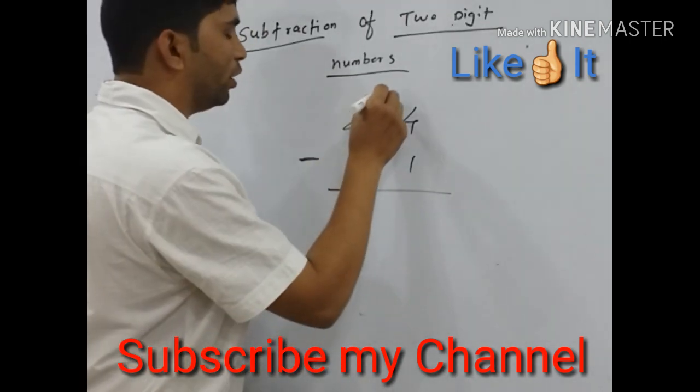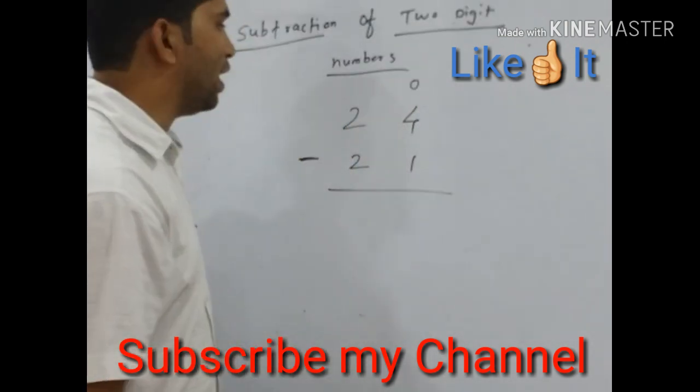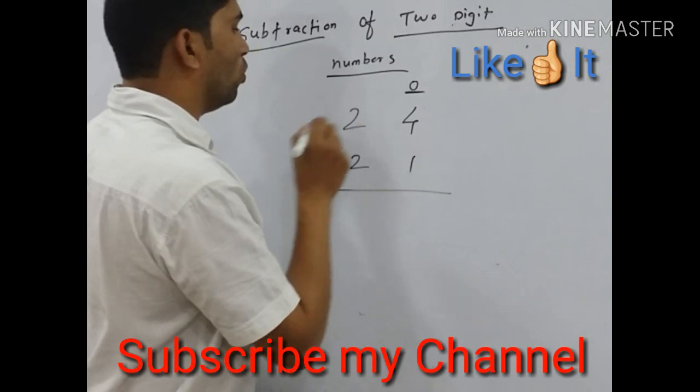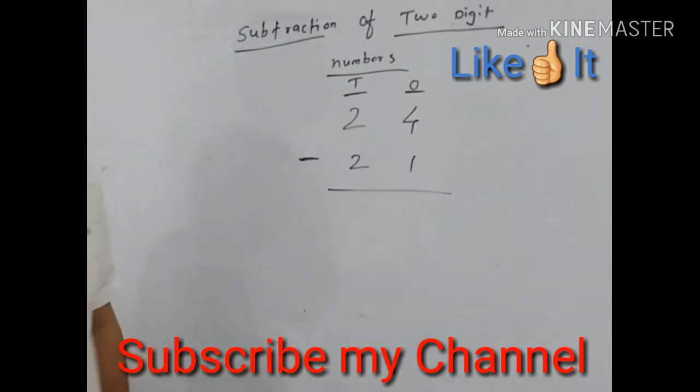Here is the two-digit number. There are two places: ones place, denoted by O, and tens place, denoted by T.